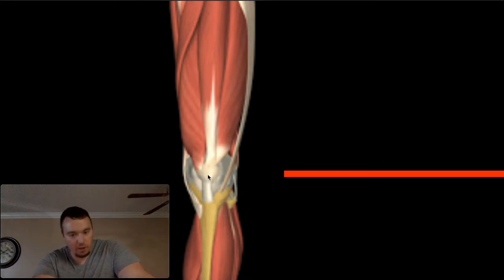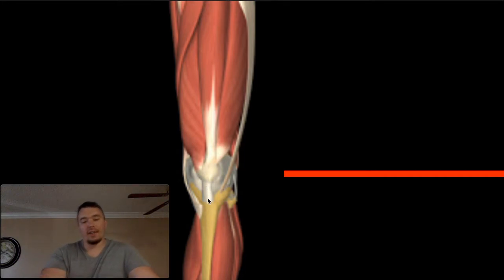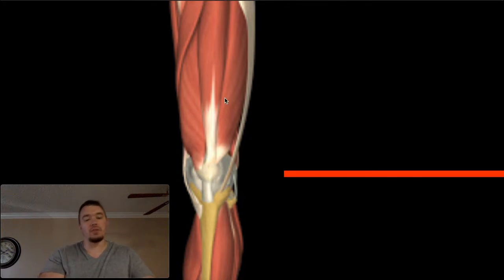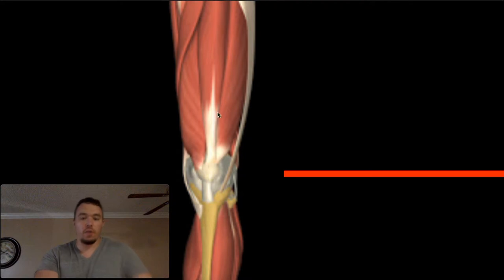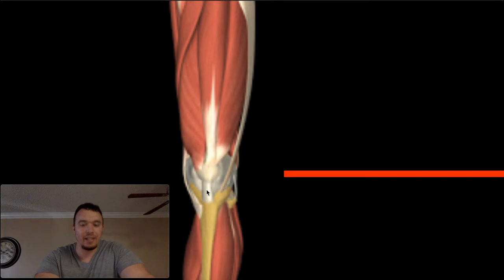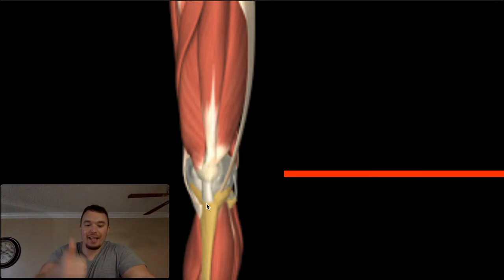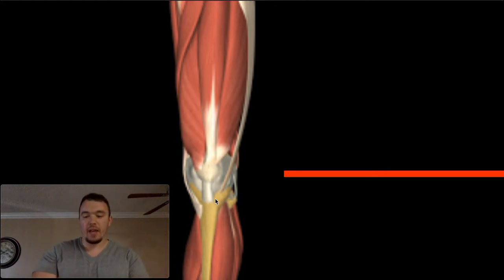Here's the patella, and then the patellar ligament, which ultimately attaches on the tibial tuberosity. Whenever these four quadriceps muscles contract, we get knee extension — by pulling on the patella and the patellar ligament, pulling the tibial tuberosity proximally, which allows us to extend the knee.